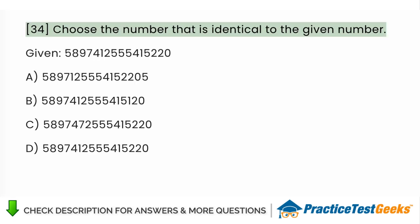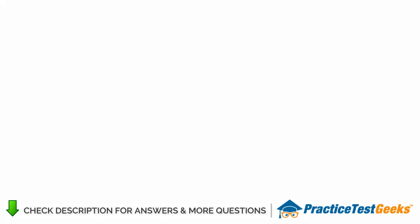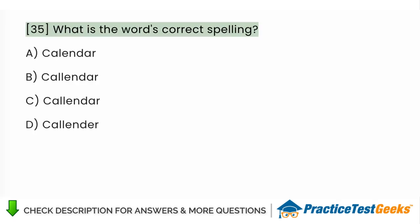Choose the number that is identical to the given number Given, 5897-412-555-415-220 A. 5897-125-55-415-220 B. 5897-412-55-415-120 C. 5897-412-55-415-220 D. 5897-412-55-415-220